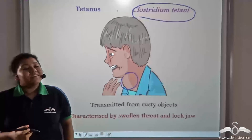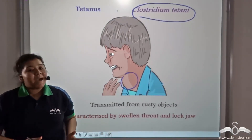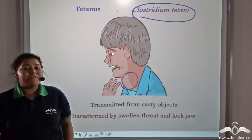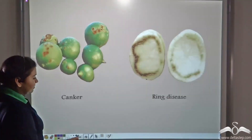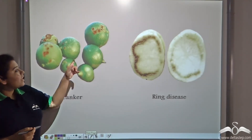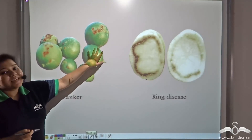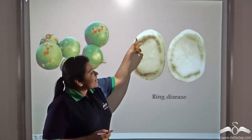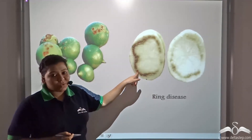Bacteria do not only cause diseases in humans and animals — they can also affect plants. Bacteria can cause canker disease in certain fruits like limes, and ring disease in vegetables such as potato.